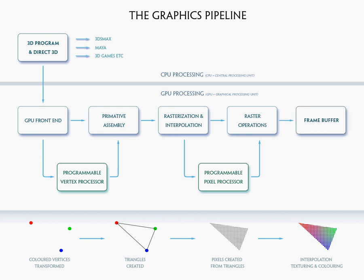So there you have it — a tour of the graphics pipeline. The main thing I want you to see from this tour is that when you write a shader, you're writing two different pieces of code. You're writing a vertex shader that runs at the programmable vertex processor, and the vertex shader works at the vert level — it's only doing things to the vertices. You're also writing a pixel shader that runs at the programmable pixel processor, and the pixel shader works at the pixel level. So you have control over both vertices and pixels, and you can decide while writing your shader exactly where you want each piece of information to be processed.